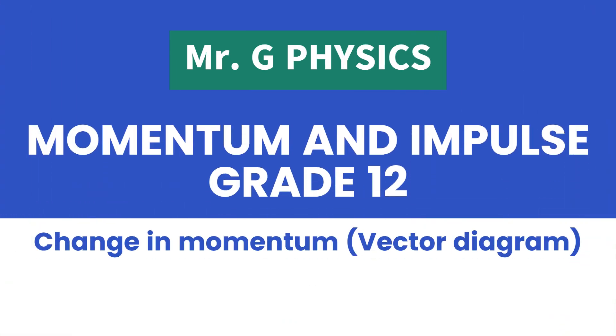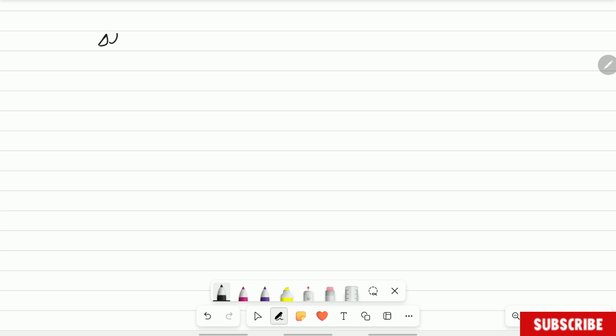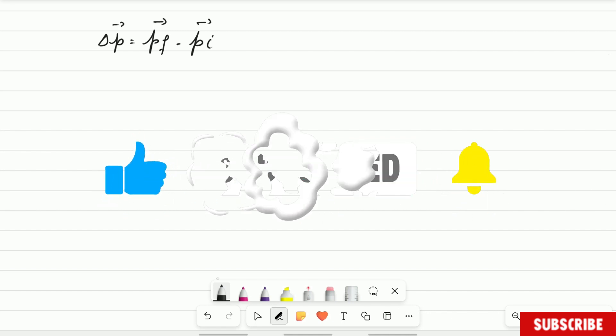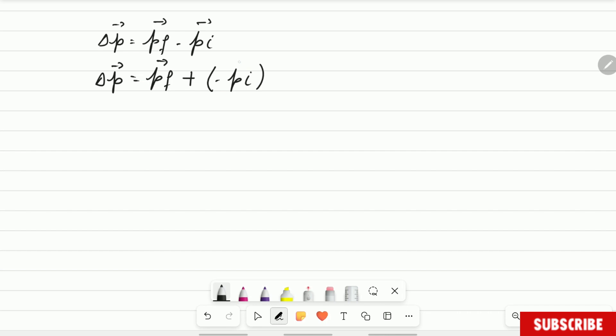Okay, so let's start by recalling the change in momentum. The change in momentum is equal to final momentum minus initial momentum. Is that correct? Now mathematically speaking, we can say that change in momentum is equal to final momentum plus minus initial momentum. Do you understand? Now what is this?